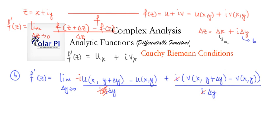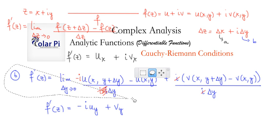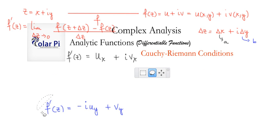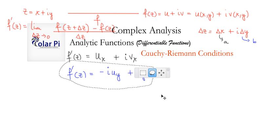Just as before, once we evaluate the limit, we're going to get some partial derivatives. Specifically, we're going to get -iuy plus vy. So we see that f'(z) will have to equal this. Well, we already had something else based on a that f'(z) had to equal. So let's see what we've got.